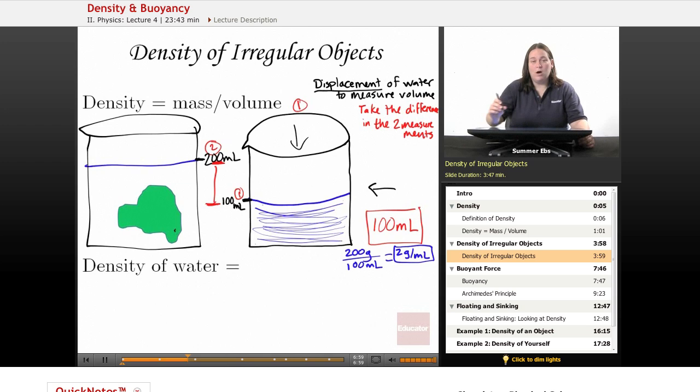Now, the density of water. This is an important one because later this will tell us if objects sink or float, based on how their density relates to the density of water. Water, if you took one milliliter of water, it would weigh one gram.